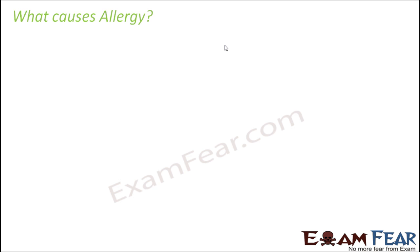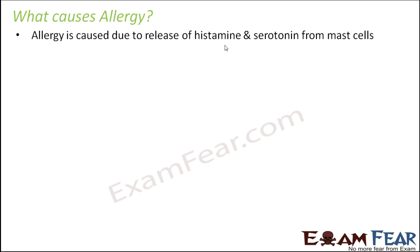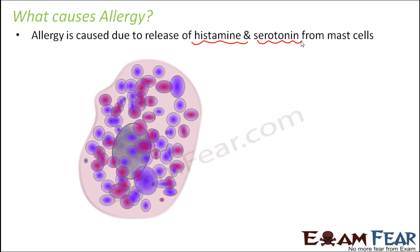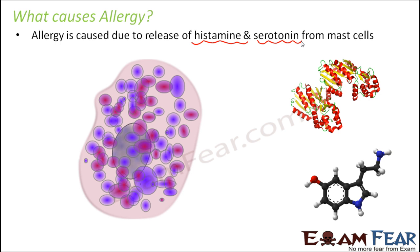Allergy is caused due to the release of histamine and serotonin from mast cells. When these chemicals are released from mast cells, allergy occurs. The allergic reactions can differ between individuals: for some people the response comes as sneezing, for some they catch a cold, and for others there is inflammation on a particular part of the body. So allergy can manifest in many different ways.